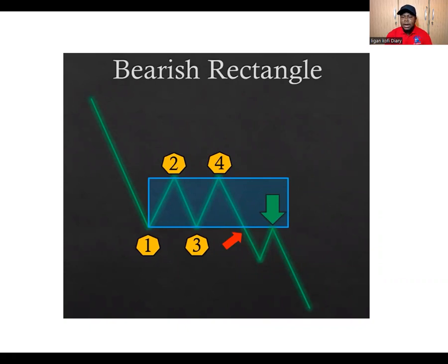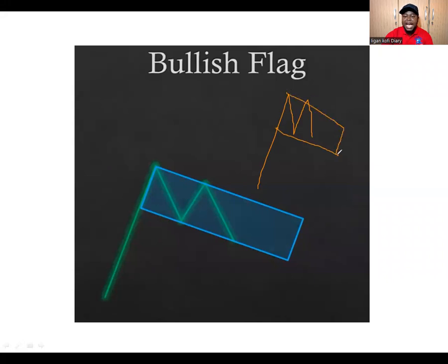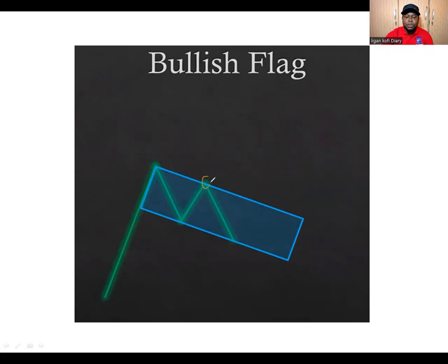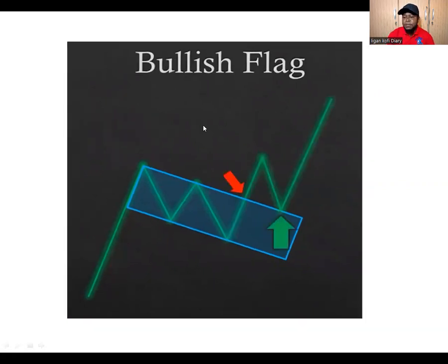Now let's look at the next pattern — the bullish flag. This one looks like a flag. The market is trending to the upside and then you see something like a flag shape, with the market trending within the flag. Once the market breaks out of the flag to the upside, you note these two boundary points. When the market breaks out, you wait for a retest and then take your buy to the upside. You'll often see this pattern as the market makes an uptrend.